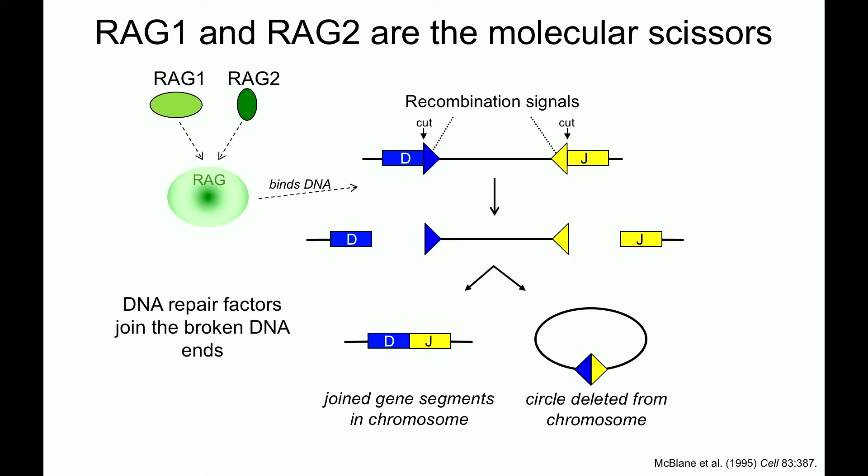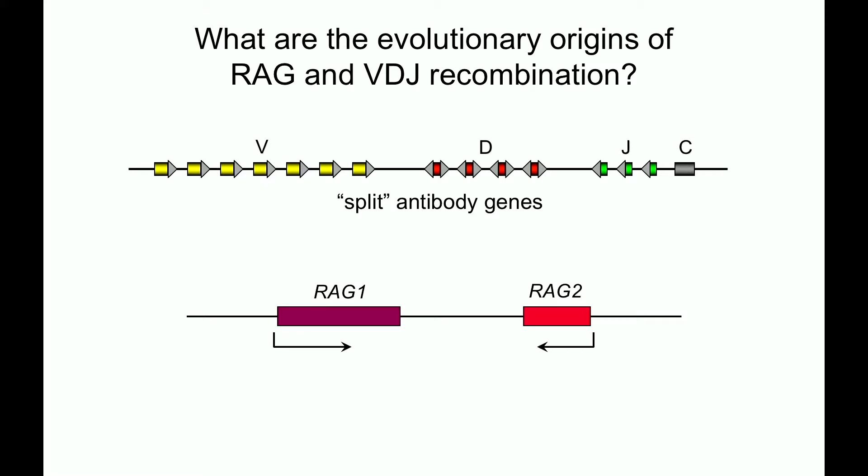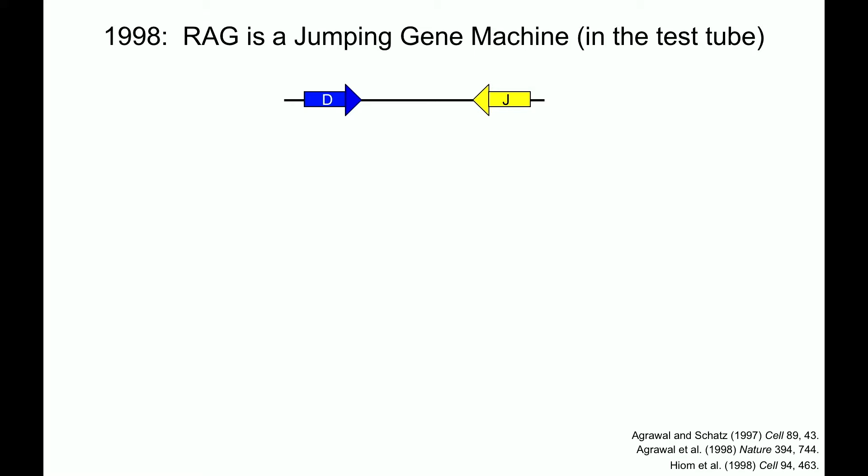That's VDJ recombination. The question we've been thinking about for 30 to 40 years now is: where did this really weird system come from? What are its evolutionary origins? We've got these totally weird, almost unprecedented genes that are non-functional when you get them from your parents, and we've got RAG1 and RAG2 sitting right next to one another. A key piece of evidence that told us probably what was going on came in 1998.